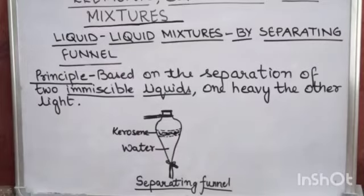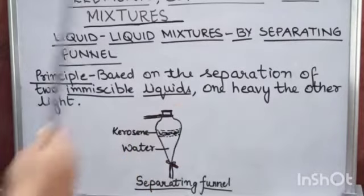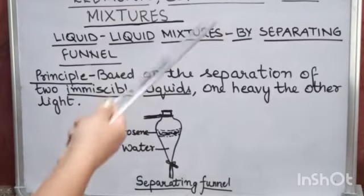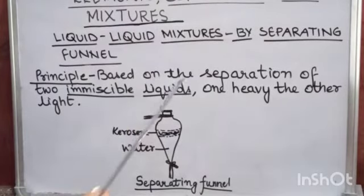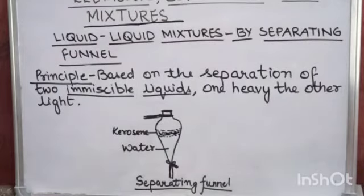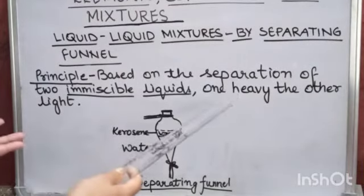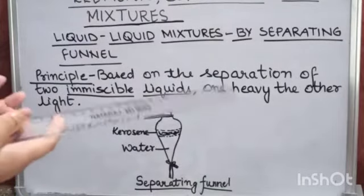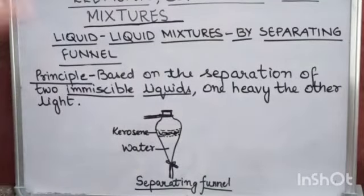To separate two immiscible liquids — that is, to separate liquid-liquid mixtures — we use a separating funnel. The principle involved is based on the separation of two immiscible liquids. Immiscible means liquids that cannot be mixed. One which is heavy will settle down, and the other which is lighter will float above the surface.